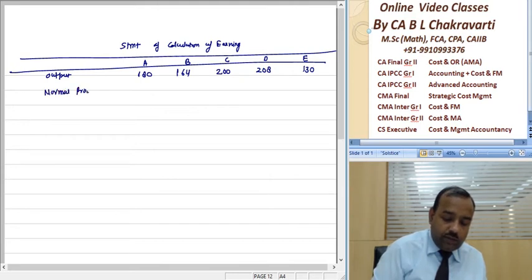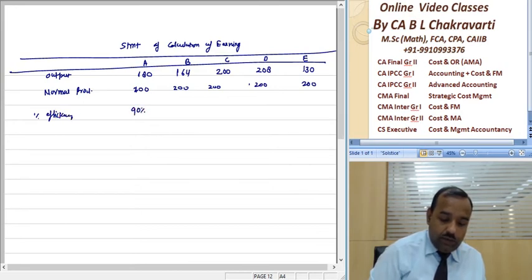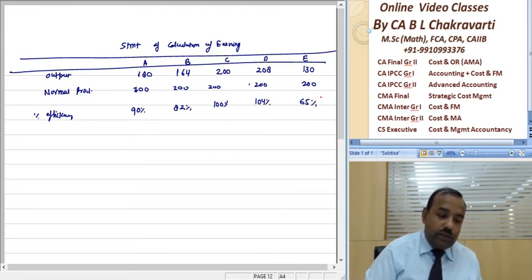The normal production was 200. So percentage of efficiencies: A is 90%, B is 82%, C is 100%, D is 104% and E is 65%.